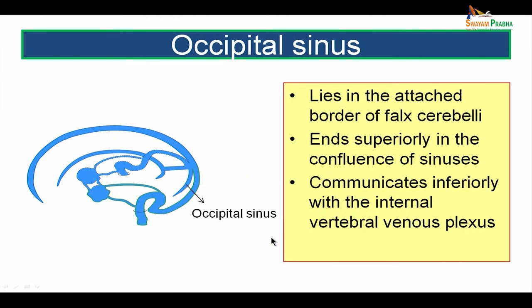The occipital sinus lies in the attached posterior border of the falx cerebelli. It ends superiorly in the confluence of sinuses and communicates inferiorly with the internal vertebral venous plexus.